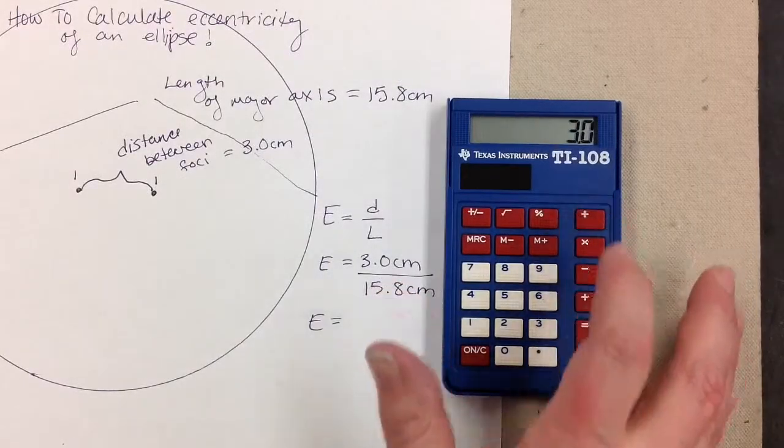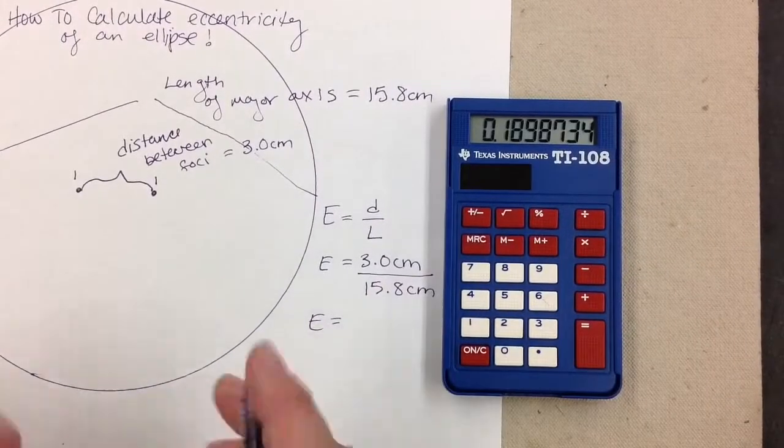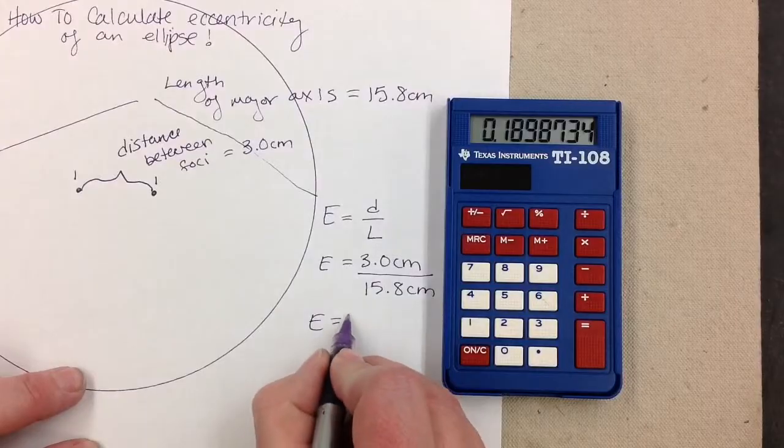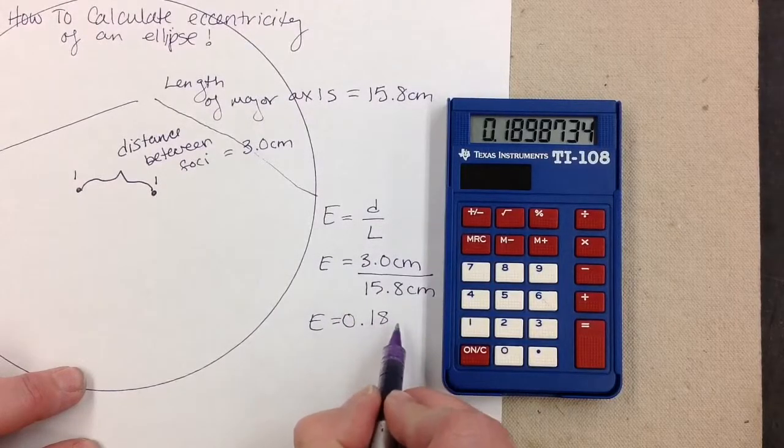Use my calculator, put the 3.0 in first, divide by 15.8, and I'll get my eccentricity value. However, I'm going to write out the whole longer value here right now for us.